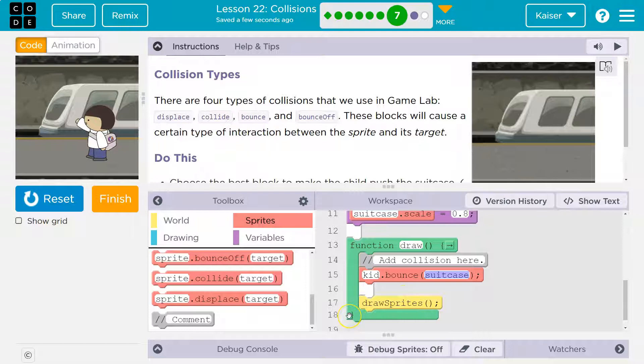With the draw function or the draw loop running 30 times a second, we are checking 30 times a second if they are touching. If they are, whatever word we have here—it's a method—but whatever word we have here: bounce, bounce off, collide, displace happens.